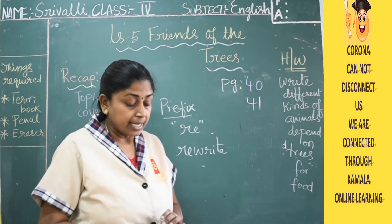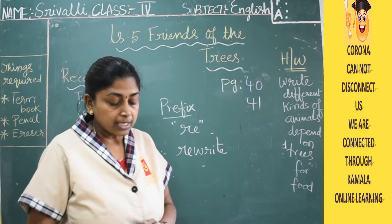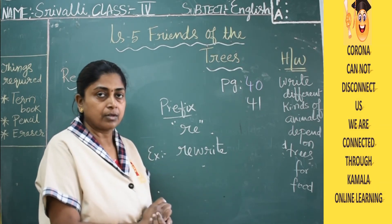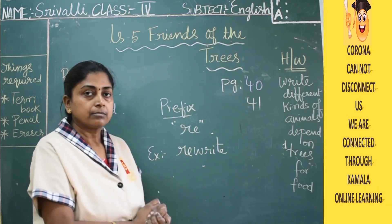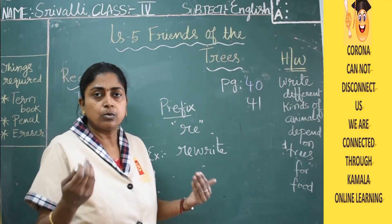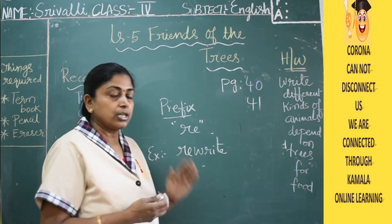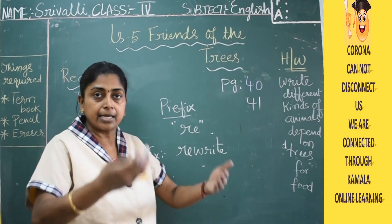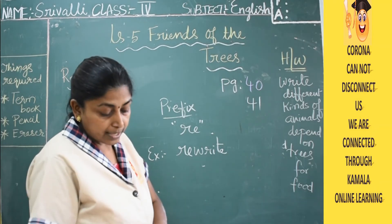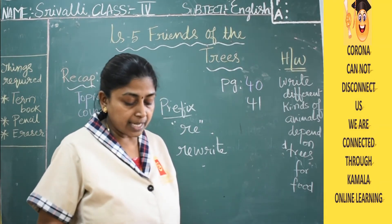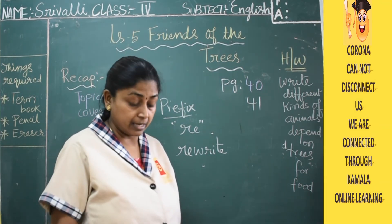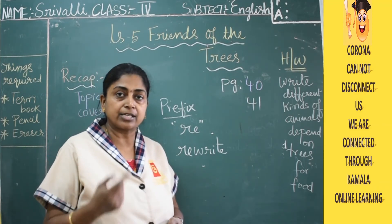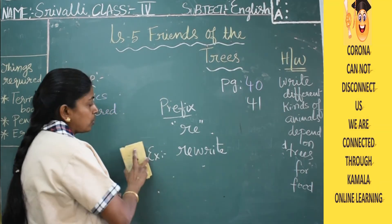The prefix 're', when added to a word, suggests a repetition of the action. For example, 'write' — if I have to ask you to write something again, I will say 'rewrite'. Children, rewrite whatever is written. You do the writing action one more time. When we say 'rewrite', we mean write something again. When we say 'redo', we mean do something again — perform the action again.